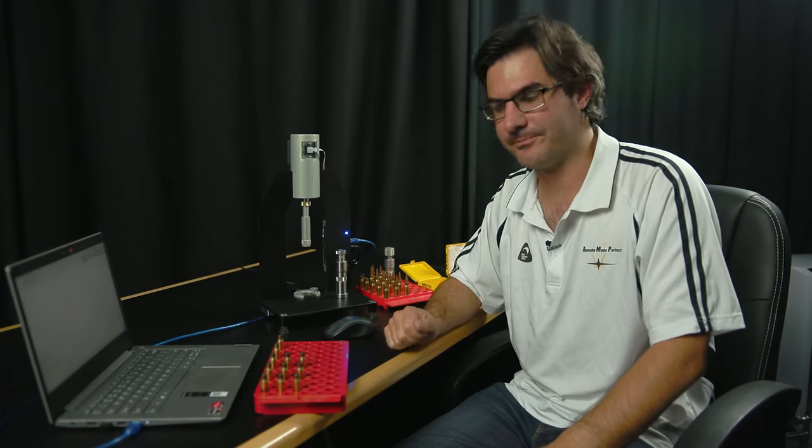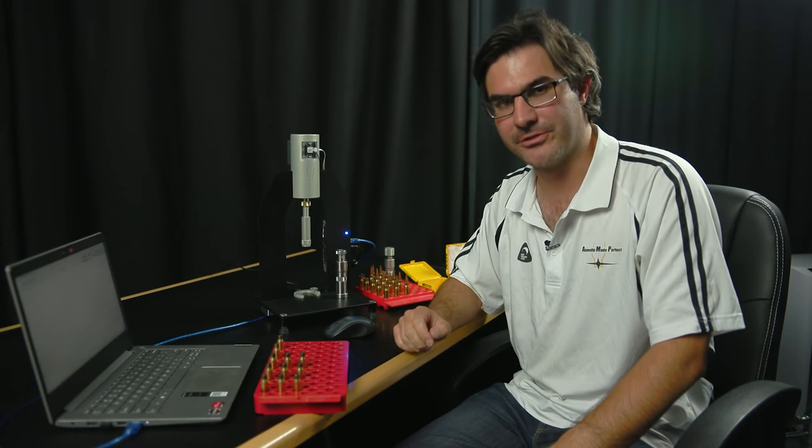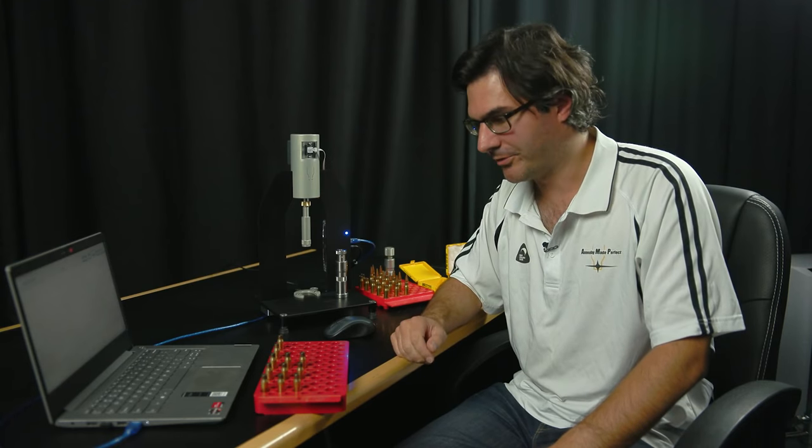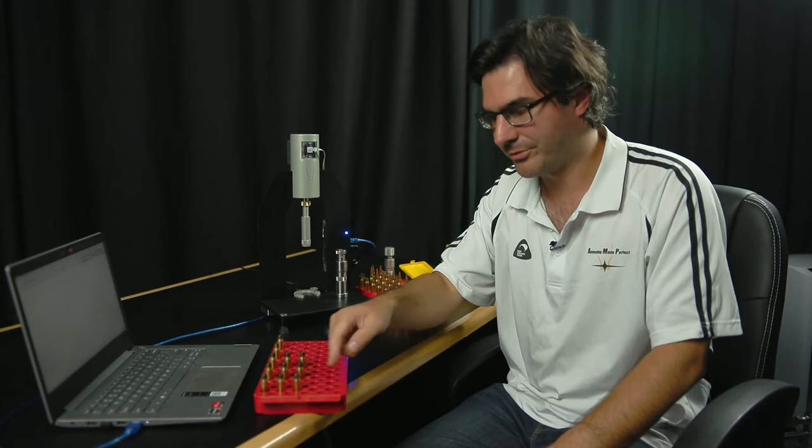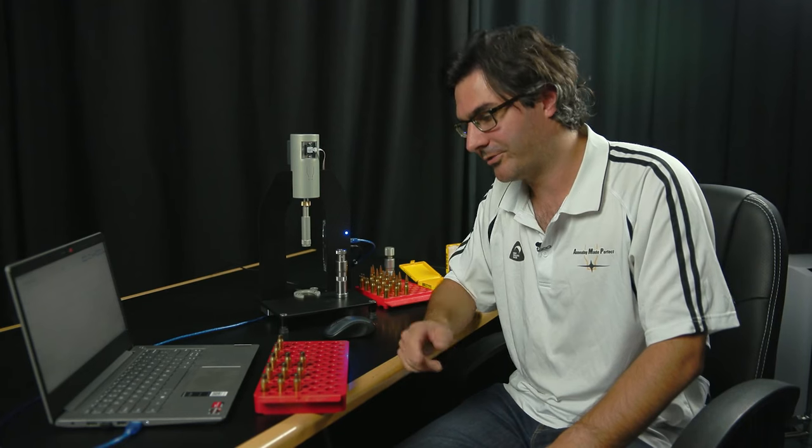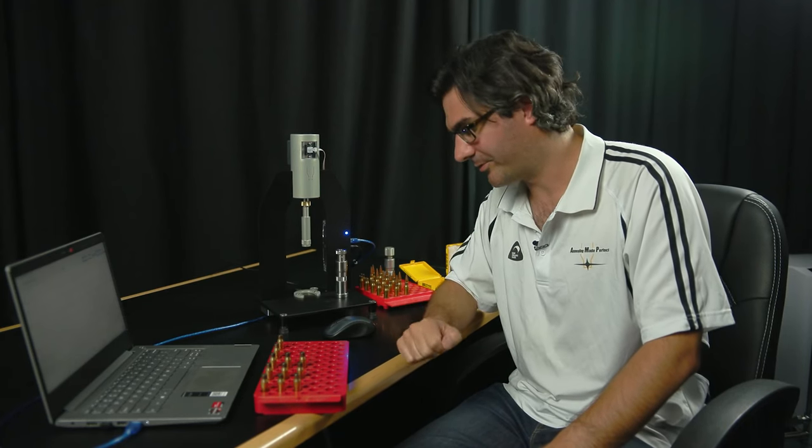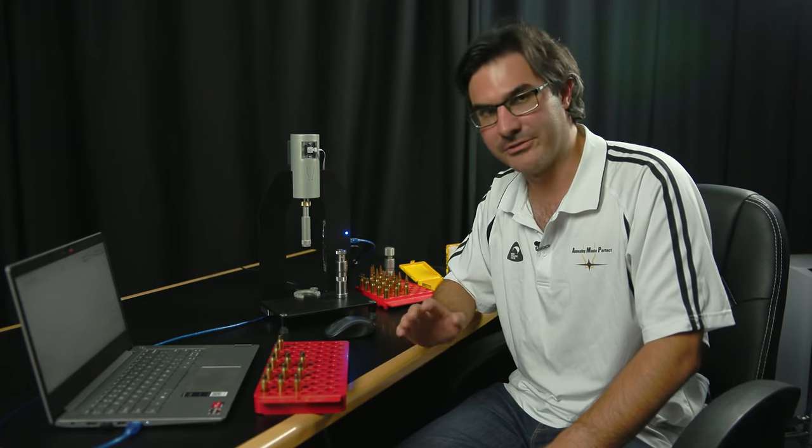What we're going to do now is quickly show you some scenarios you might encounter when using the press and the differences you might see. First of all, we've got a selection of cases here. We're going to do three of each with the exception of these two at the end. The first three we're going to seat, these are all 308. These first three are a two thou interference fit or neck tension and they're dirty.